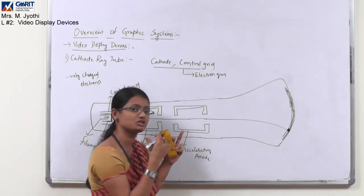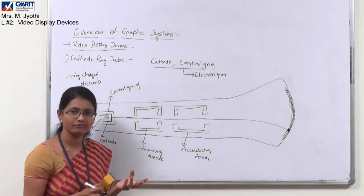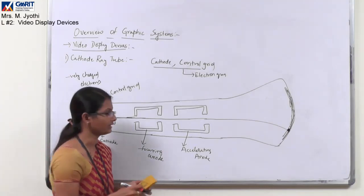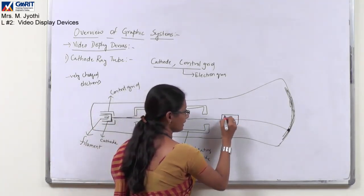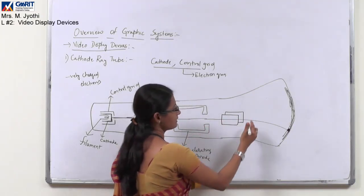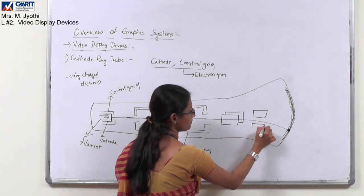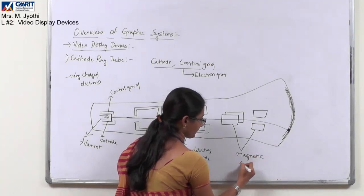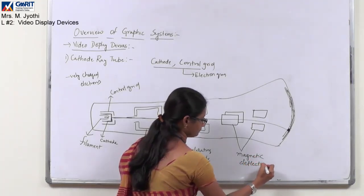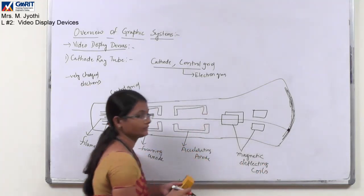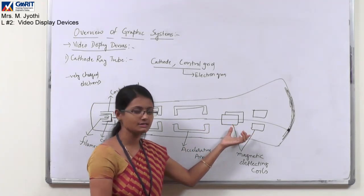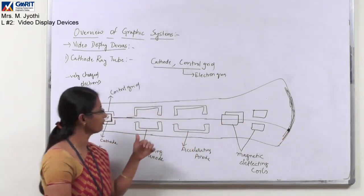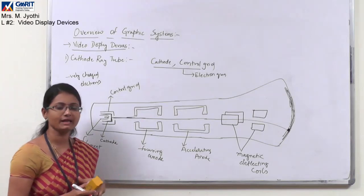Similar to the focusing anode, we also have magnetic deflection coils — two pairs. One pair is placed horizontally and the other pair is placed vertically, one on each side and one on top and bottom. This focusing anode and these magnetic deflection coils together help in traversing the electron beam and hitting it at a particular position. This is the working of your cathode ray tube, which is one type of video display device.